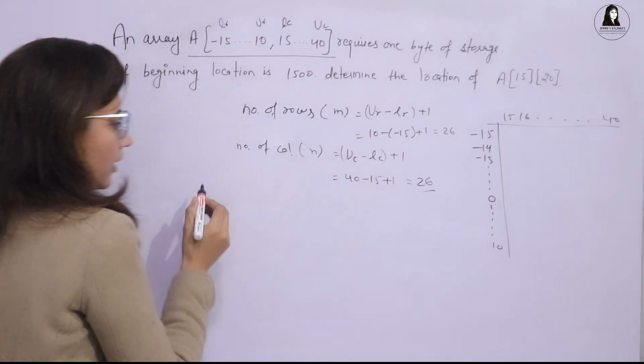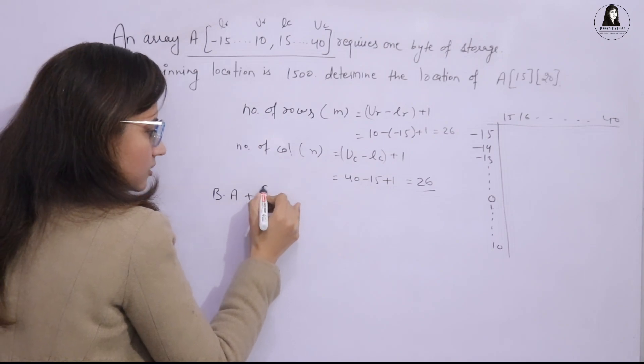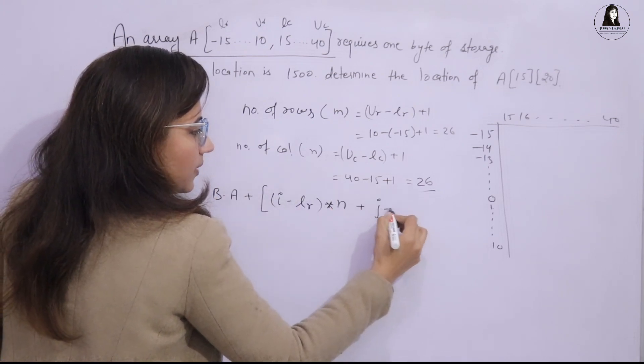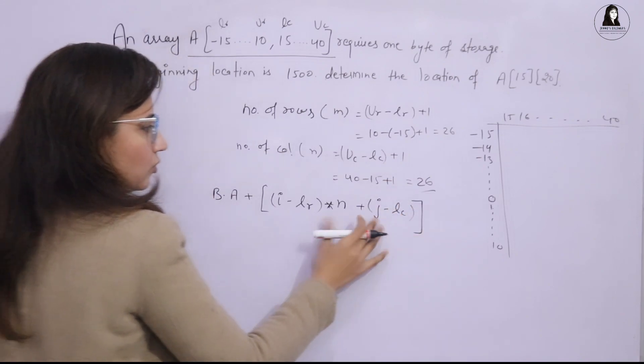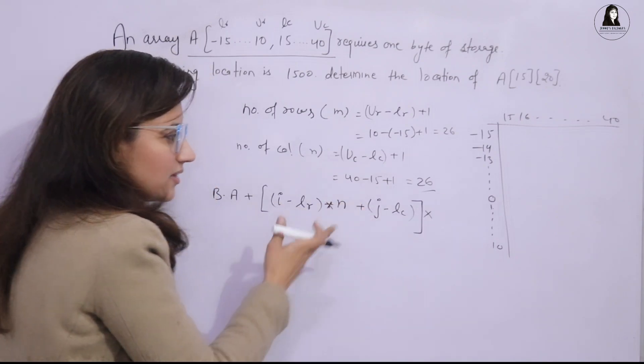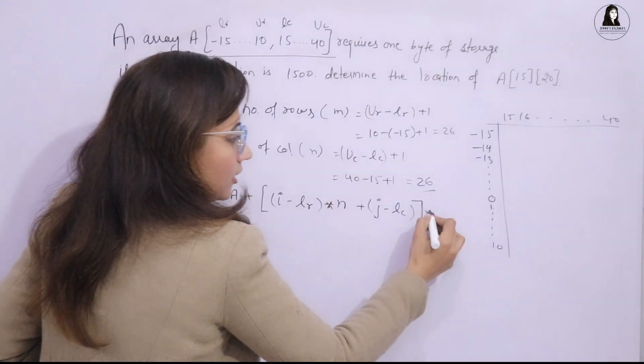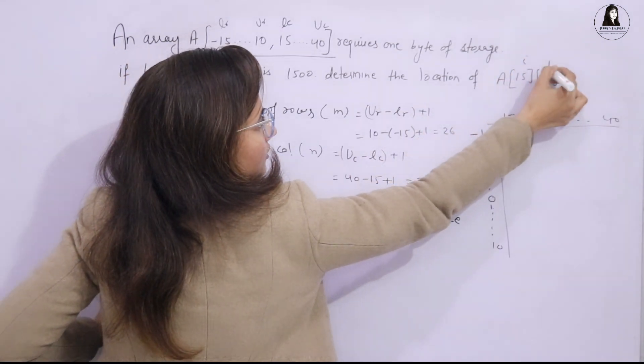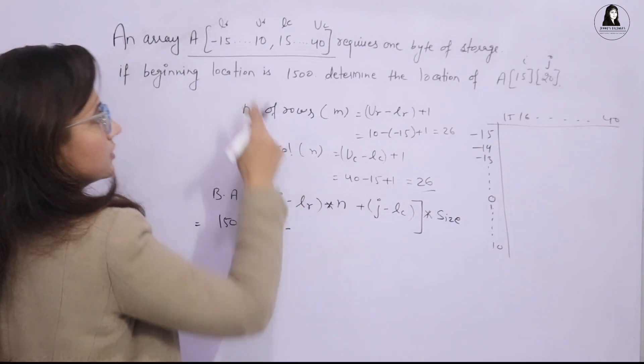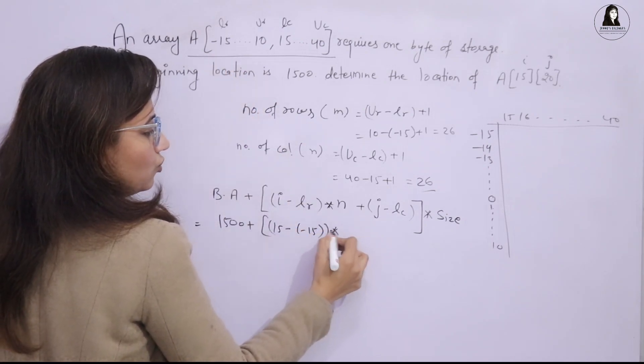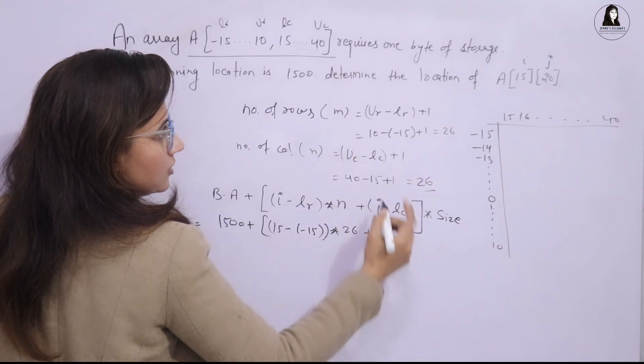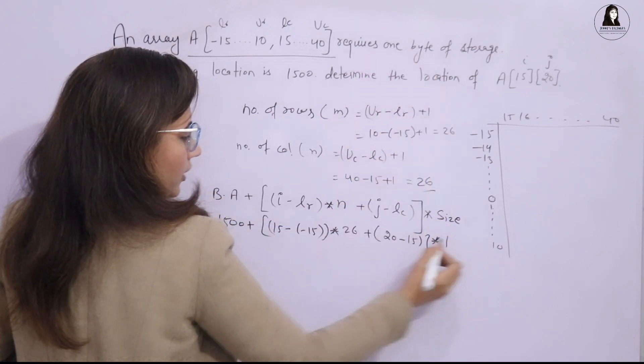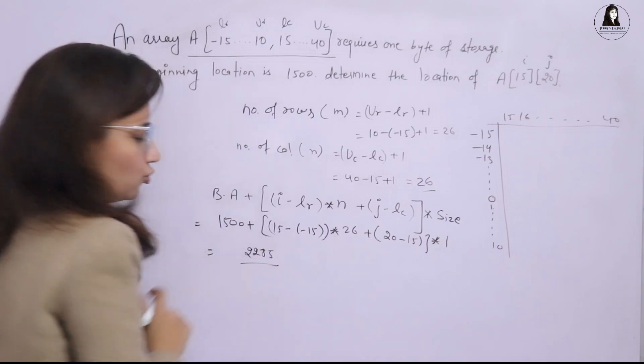Now, you know the formula for row major. What is the formula? The formula is base address plus (I minus LR) times number of columns plus (J minus LC) times size. This formula we have discussed in previous video. So here base address is 1500 plus - you just have to put the values. This is I, this is J index. I for row, J for column. So 15 minus LR is minus 15, times N is 26, plus J is 20 minus LC is 15, times size which requires one byte of storage is 1. If you calculate this, you will get 2285.